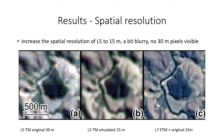Now if we look at the spatial resolution: on the left, the original L5 image at 30 meter; on the right, the original pan-sharpened L7 image at 15 meter resolution; and in the center, the L5 image emulated at 15 meter with the super-resolution model. What we see is that the model enables recovery of an image at 15 meter resolution. The image is still a bit blurrier than L7, but we no longer see the 30 meter pixels.